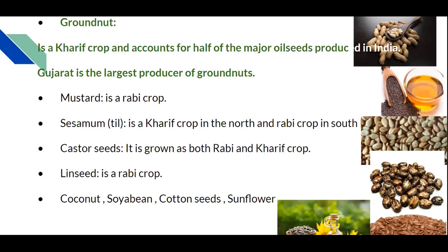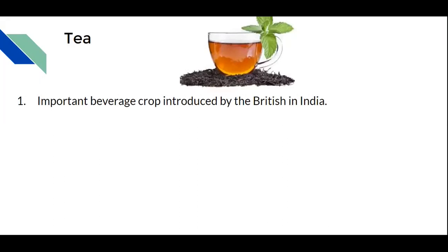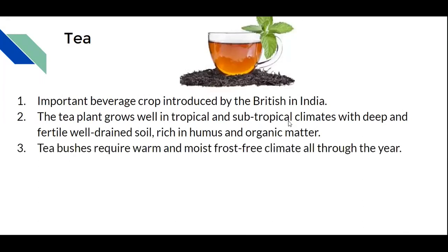Now we are going to talk about tea cultivation. Tea is an important beverage crop introduced by the British in India. The tea plant grows well in tropical and subtropical climates with deep, fertile, well-drained soil rich in humus and organic matter. Tea bushes require a warm, moist, frost-free climate throughout the year. Tea is a labor-intensive industry which requires many workers.